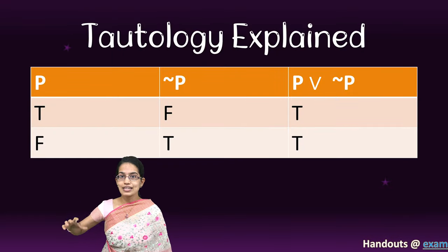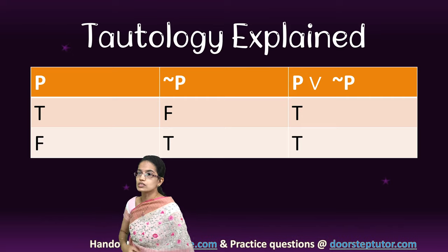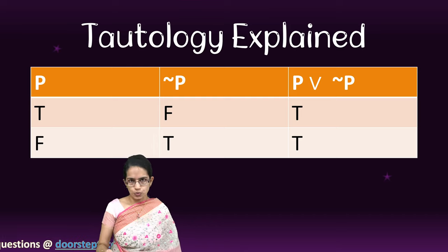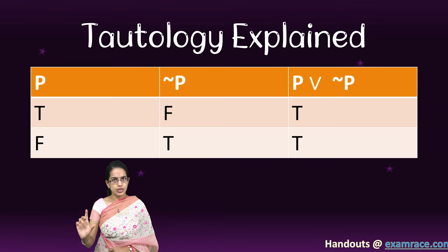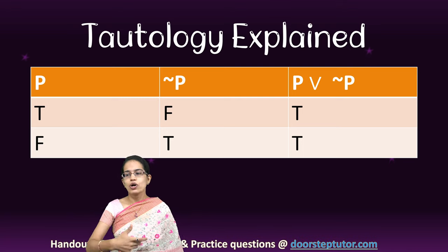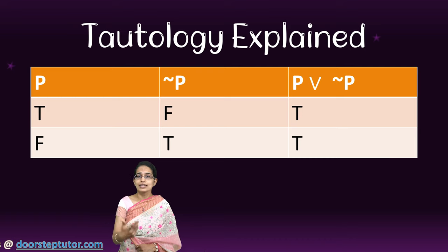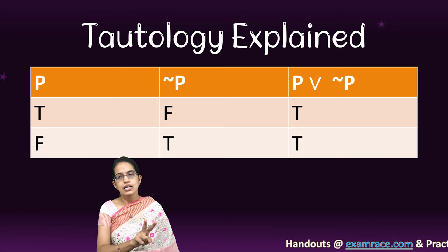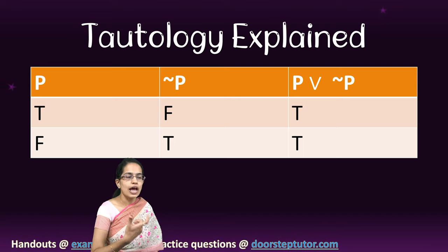We would be covering these in detail in further lectures, but this is a brief idea to help you understand what tautology is. If a proposition is true and the negation of the proposition is false, then the tautology is true. For example: Indira Gandhi was assassinated — the negation is she was not assassinated. So the tautology is always true: Indira Gandhi was either assassinated or she was not. There can be only two conditions, making it a true form. That is tautology.